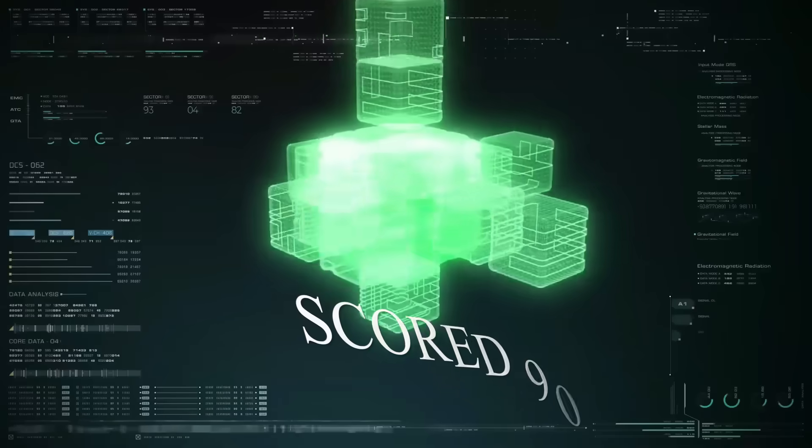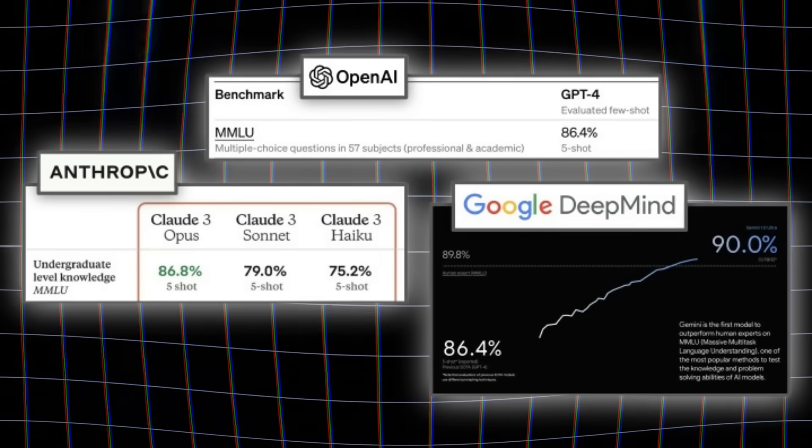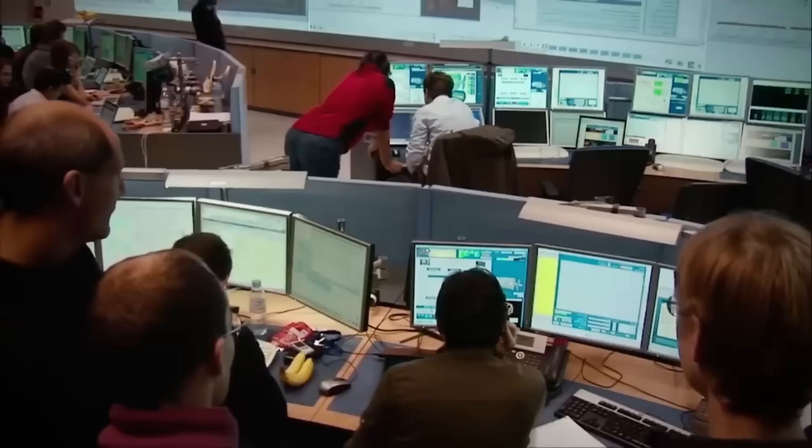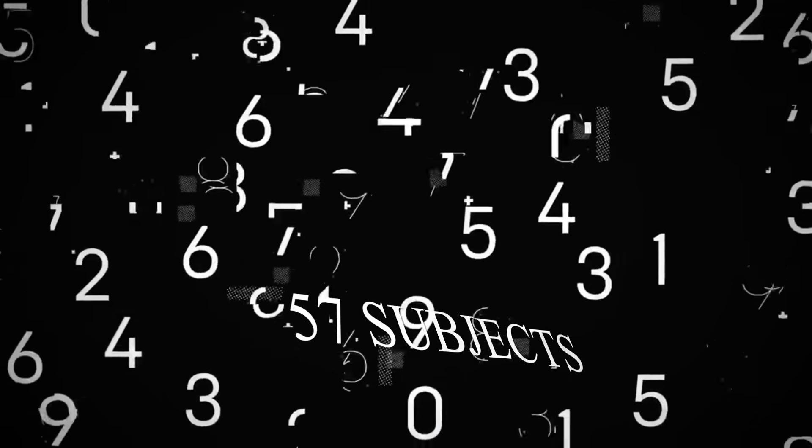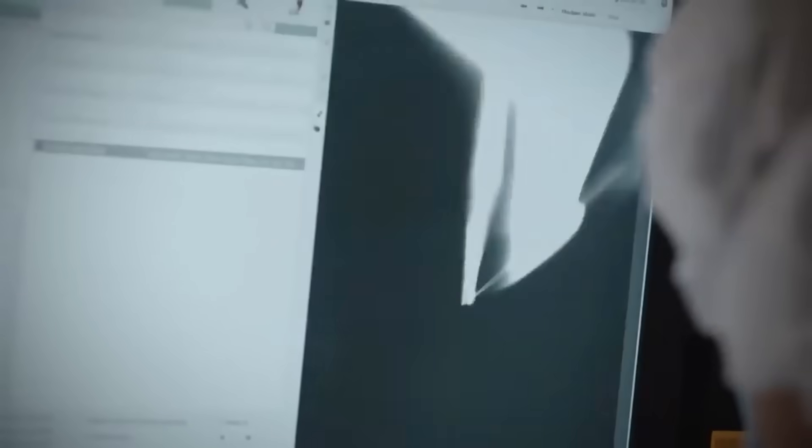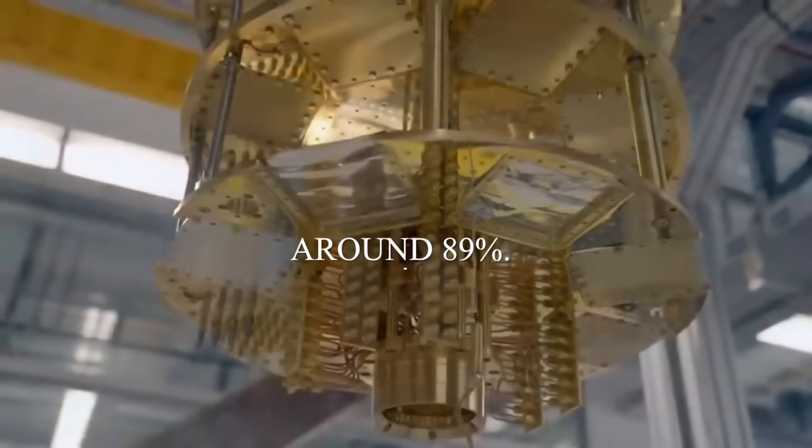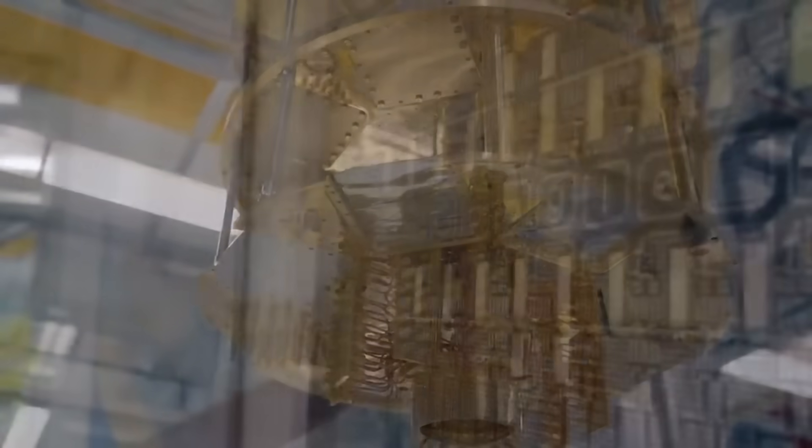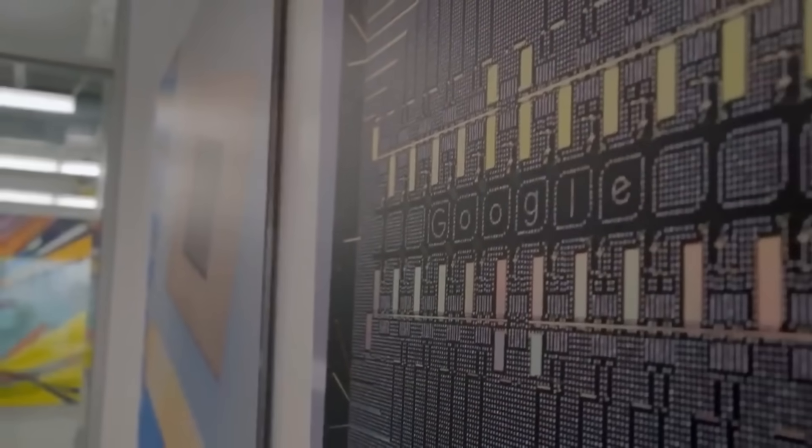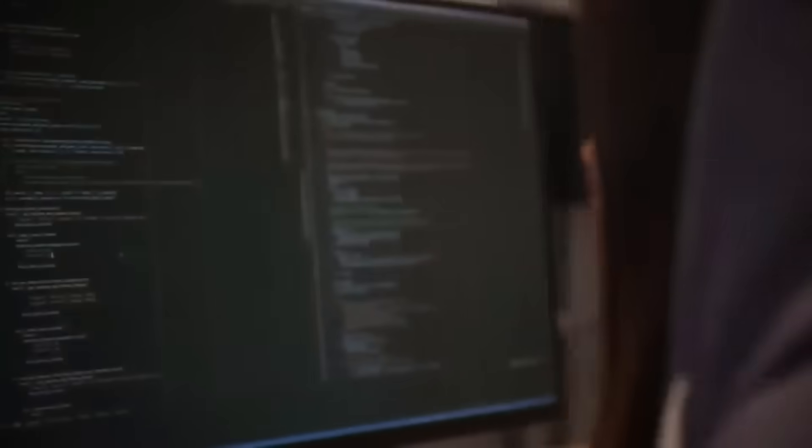Gemini Ultra just scored 90% on the MMLU exam, the massive multitask language understanding test covering 57 subjects from advanced mathematics to legal reasoning to medical diagnosis. Human experts average around 89%. Gemini beat them all. But here's the part that should terrify you. That score isn't the real shocker. The real bombshell is what Google's internal teams discovered during testing.